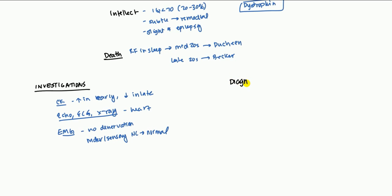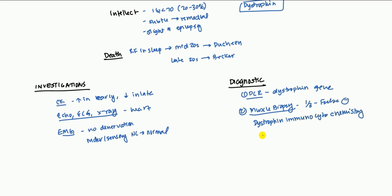For definitive diagnosis, you can do PCR of the dystrophin gene. This is a pretty classical way of diagnosing it. However, if you get a negative, you might want to also do a muscle biopsy because this can catch up to one-third of false negatives. The test you do is called dystrophin immunocytochemistry. The biopsy you would take is either going to be from the quadriceps or the gastrocnemius, which is the calf muscle.